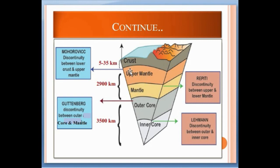There are some discontinuities between the layers of the Earth. The discontinuity between the crust and the upper mantle is known as the Mohorovičić discontinuity. The upper mantle is separated from the lower mantle by the Repetti discontinuity. The mantle is separated from the outer core by the Gutenberg discontinuity, and the Lehmann discontinuity separates the outer core and inner core. All these discontinuities are based on seismic waves.